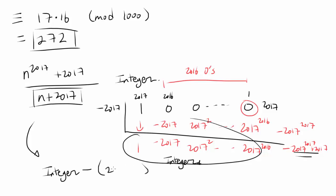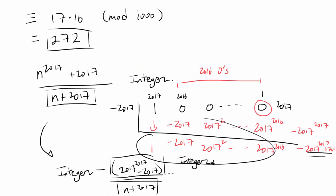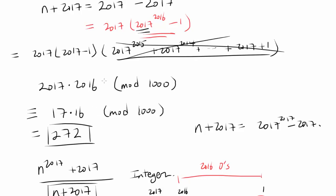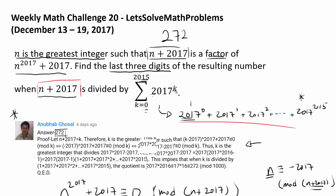Factoring out negative 1 from the remainder, we get 2017 to the 2017 minus 2017 over n plus 2017. We want this to be an integer, so n plus 2017 must be the greatest possible factor of 2017^2017 minus 2017, which means n plus 2017 equals 2017^2017 minus 2017 once again. We can use the same tactic to arrive at the answer of 272. So the answer to this question is 272.